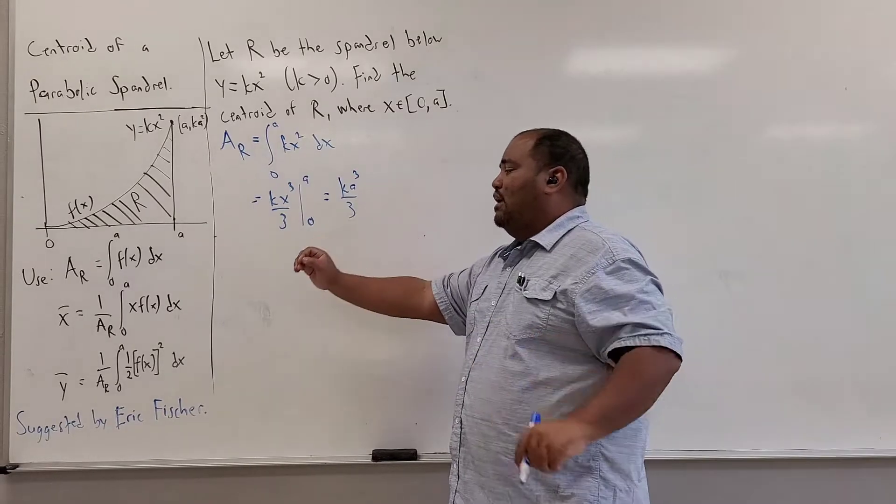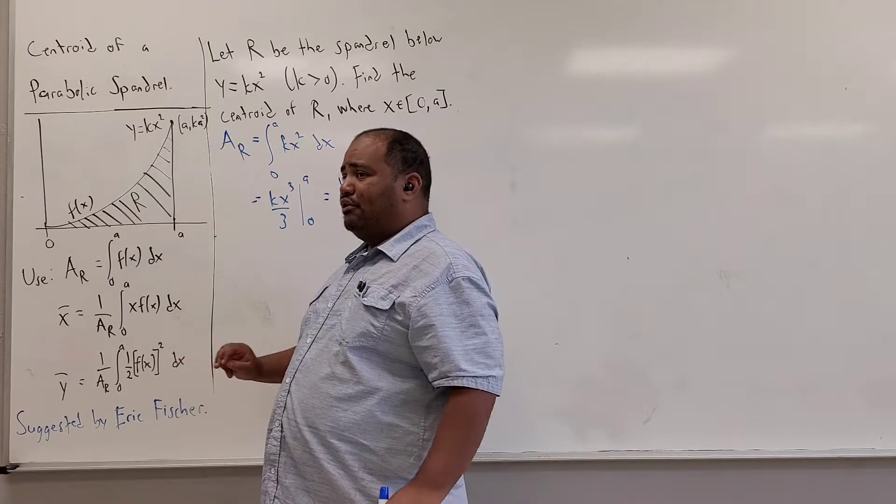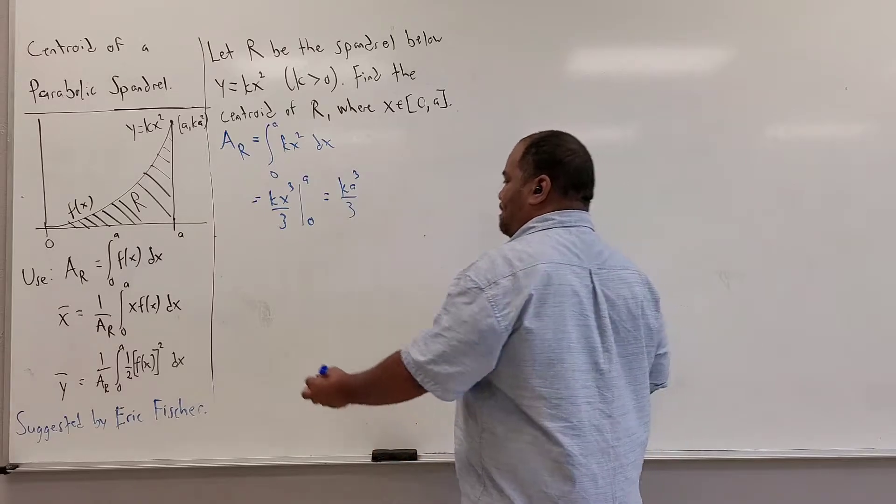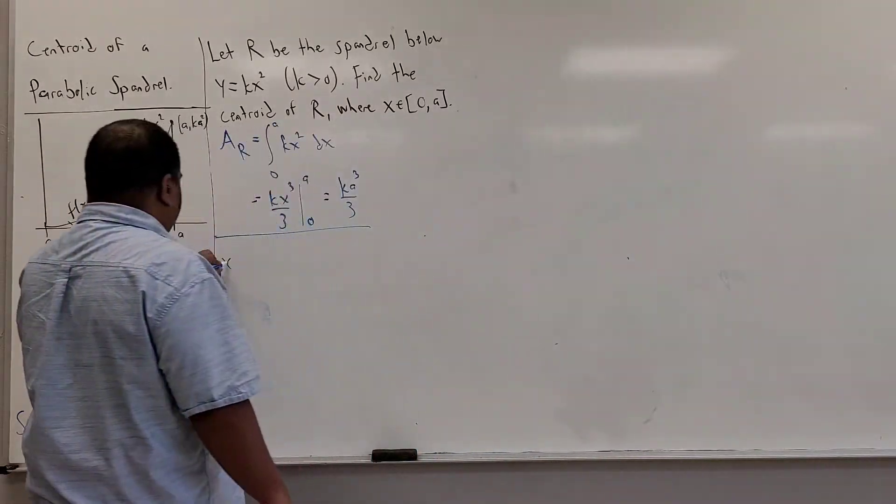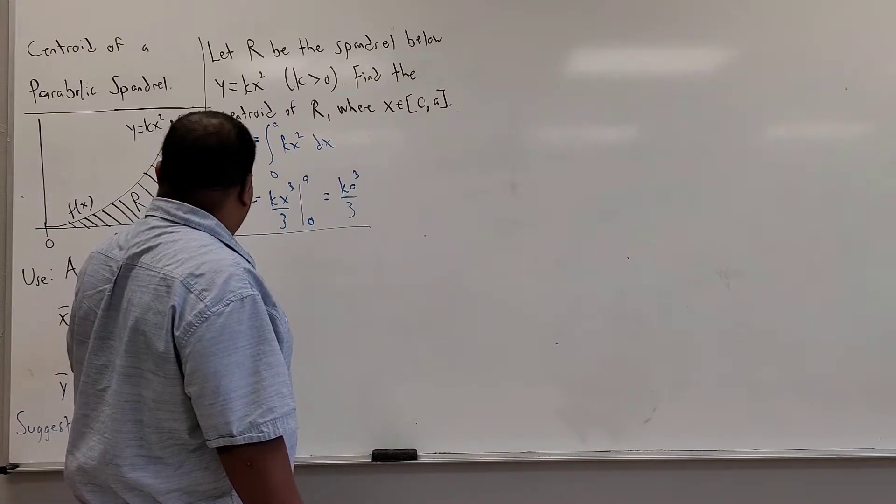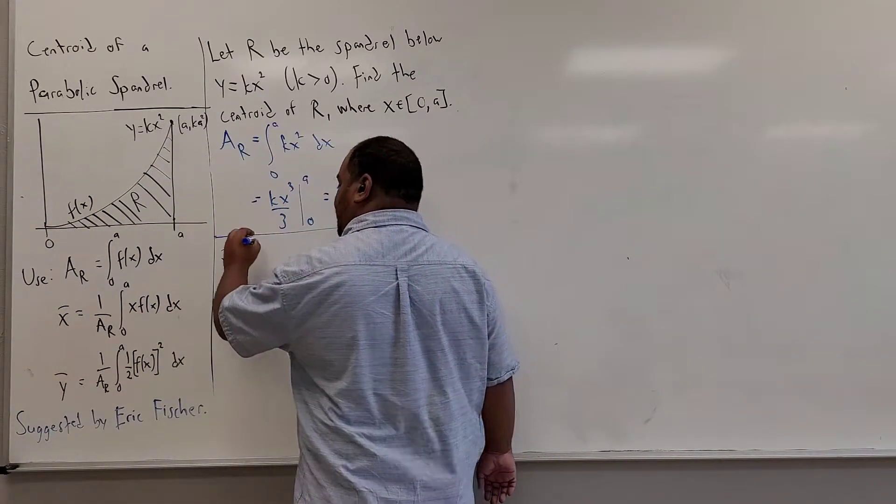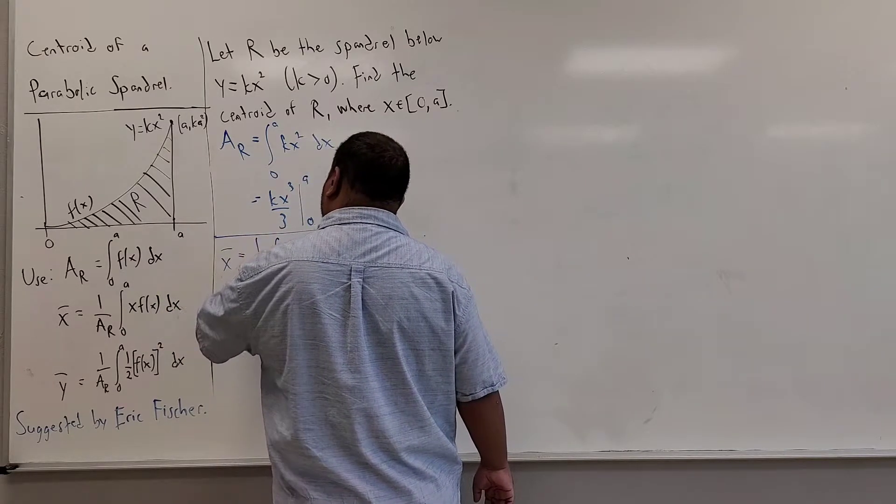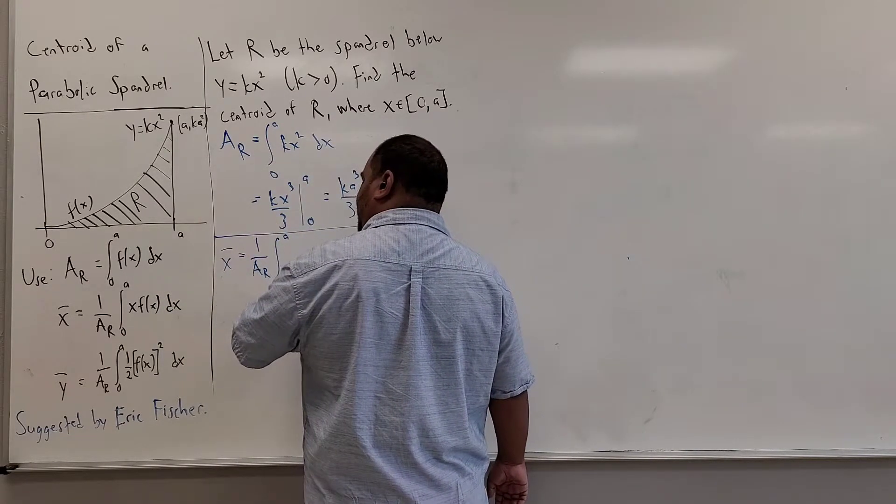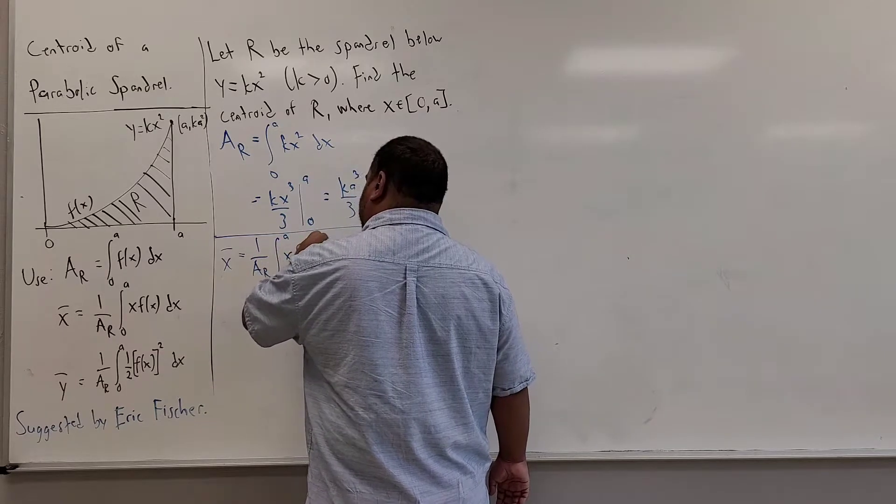Now we'll find the x coordinate and the y coordinate of the centroid here. So the x coordinate is, I'll just copy it from here on the left-hand side, 1 over the area of the object times the integral from 0 to a of x times f of x dx.